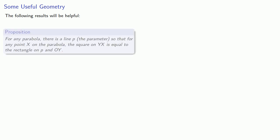It also helps to know something about the parabola and hyperbola. So we know that for any parabola, there is a line p called the parameter, so that for any point x on the parabola, the square on YX, the line drawn ordinate wise, is equal to the rectangle on p and OY. Or algebraically, if we let YX be x and OY be y, then py equals x².